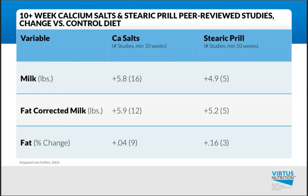When we look at research on the dairy, it's hard to assess a response without a control, so we need to go back to peer-reviewed studies. These are 10-plus week peer-reviewed studies using either calcium salts or stearic prills. Feeding a pound of energy on top of the diet, calcium salts show a milk production response of 5.8 pounds of milk, 5.9 pounds of fat-corrected milk, and a slight change in fat test. With stearic prills, we have 4.9 pounds of milk, 5.2 pounds of fat-corrected milk, and a slight change in fat test. The key point is that we're increasing fat-corrected milk, because that's what we get paid on.